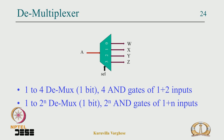The demultiplexer is the opposite: 1 input is steered to one of 4 outputs depending on the select line. Internally it uses AND gates — for a 1-to-4 demultiplexer there are 4 AND gates each with 1+2 inputs. For a 1-to-2^n demultiplexer there are 2^n AND gates each with 1+n inputs. So a multiplexer is AND-OR gates and a demultiplexer is AND gates only.